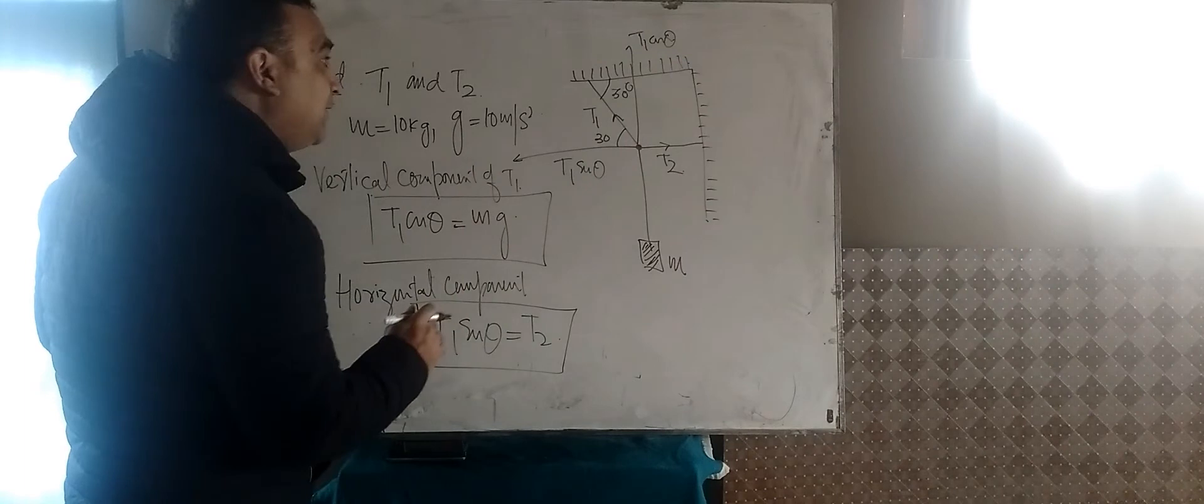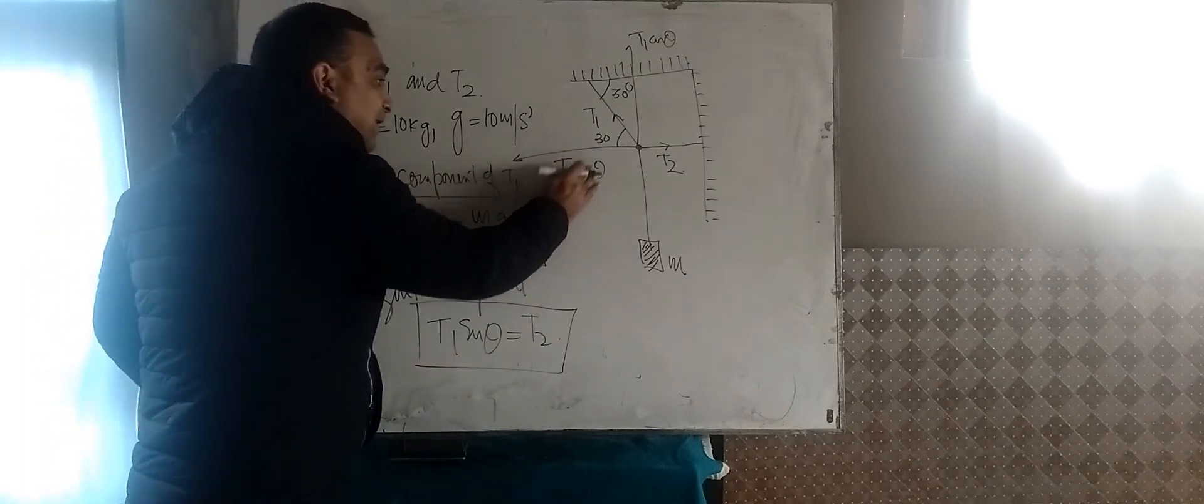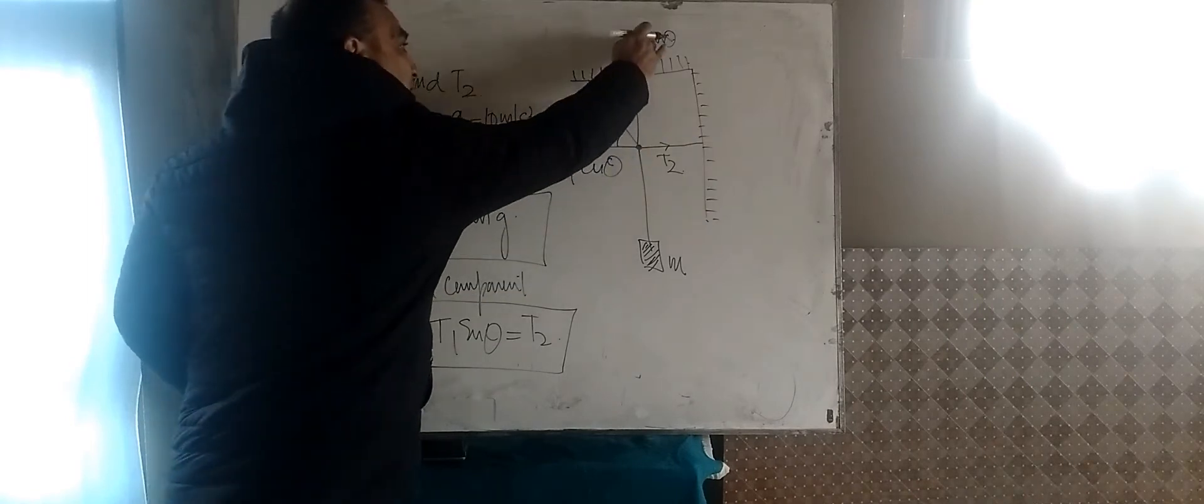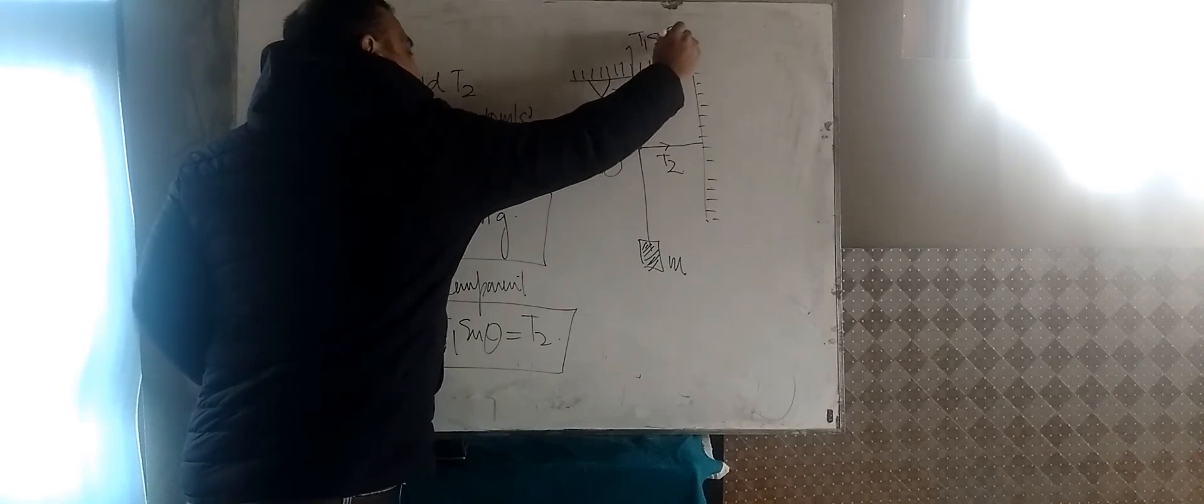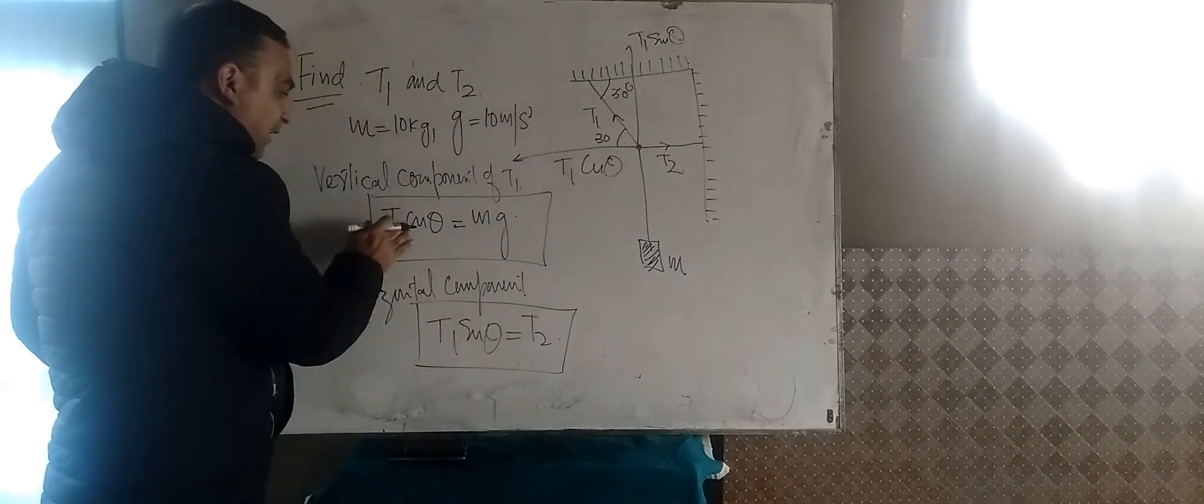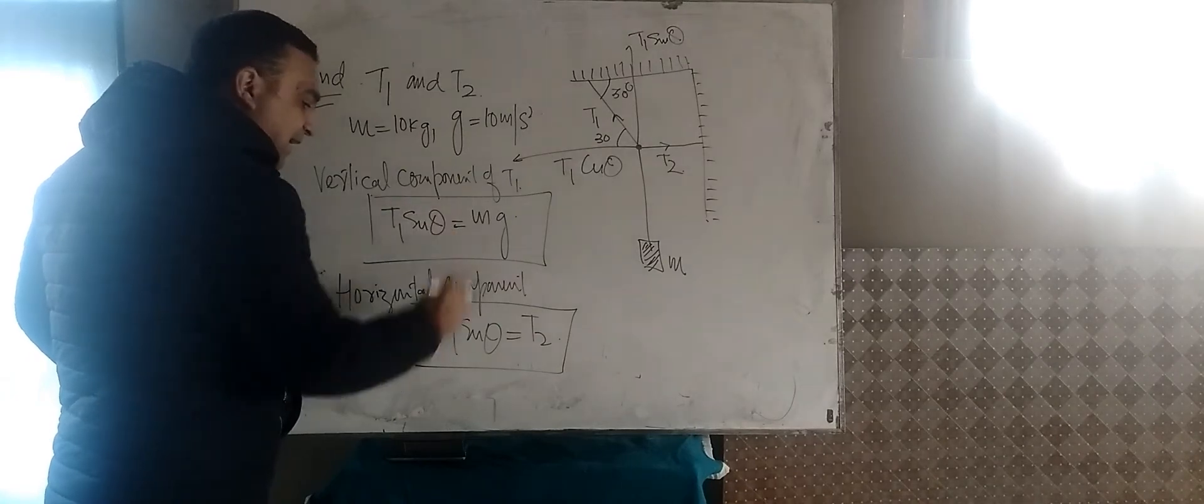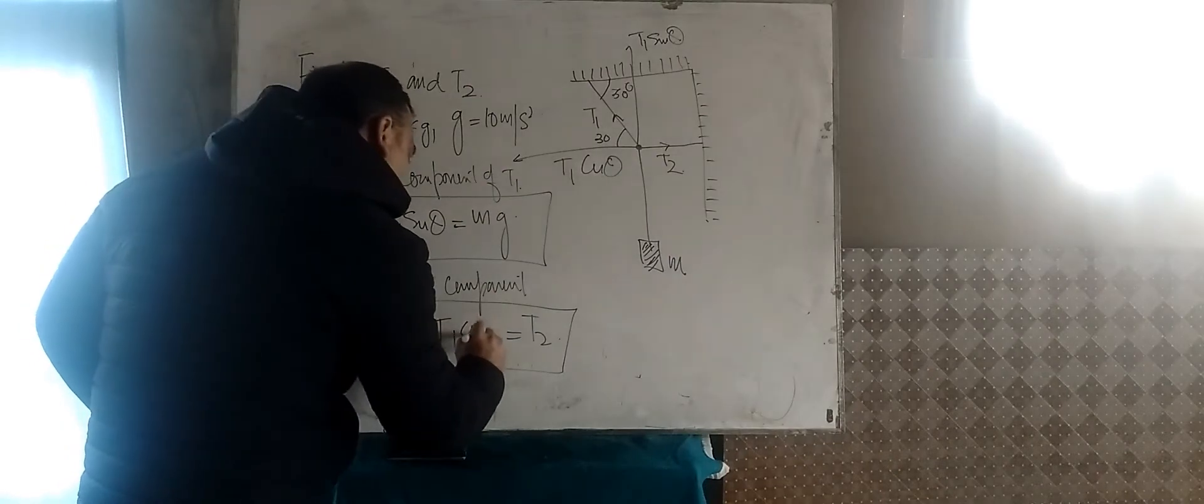I think I have done it, the components I have written in the wrong way. This is T1 cos theta, sorry, and this should be T1 sin theta. So here I should be writing down T1 sin theta and here I should be writing down T1 cos theta.